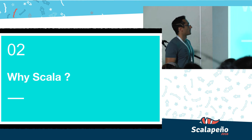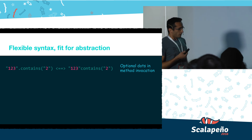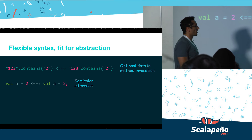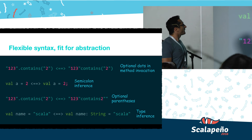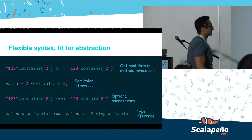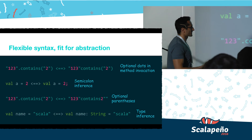The first feature is flexible syntax. We have optional dots — we don't have to write dots when we invoke a method. Semicolon inference, optional parentheses, and type inference — you don't have to mention the type of a value or object when you initiate a new one. All of these together help us write less code. The less code we write, the easier it is to understand.